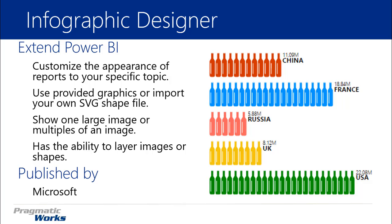In addition to being able to import graphics and shape files, you can also decide whether you want to view one large image or shape, or see multiples of it. On the right-hand side you're viewing an infographic showing multiple wine bottles, but you could alternatively have one large wine bottle and have it do a fill percent — where it fills a percentage of that wine bottle based on how many sales you've had. There are interesting ways to play around with the images you use.